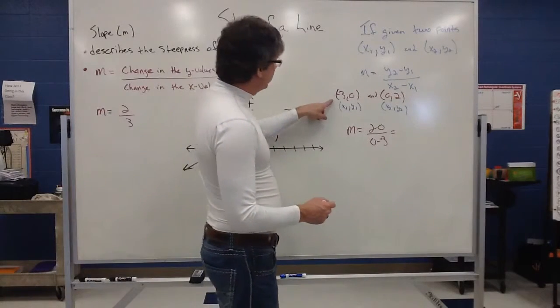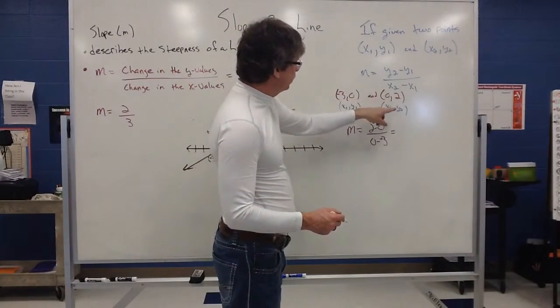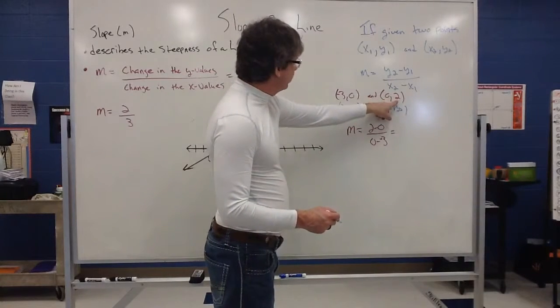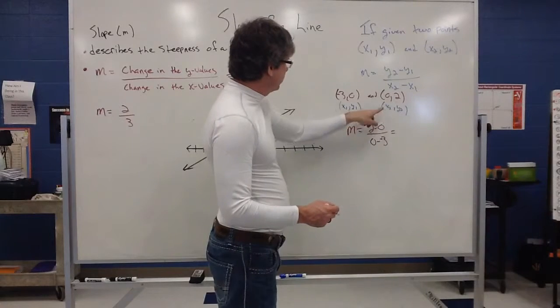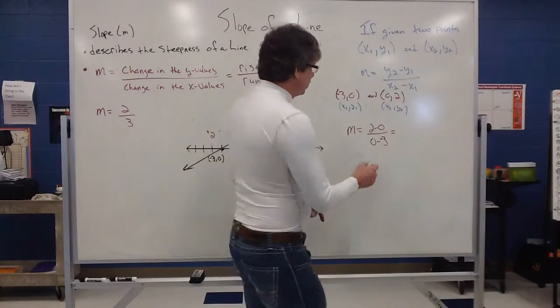So, if my point one is negative three, zero, and my point two is zero, two, I could then use y2 minus y1, two minus zero. x2 minus x1 is going to be zero minus negative three.